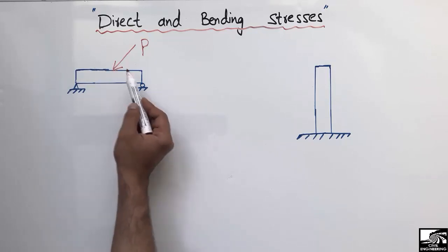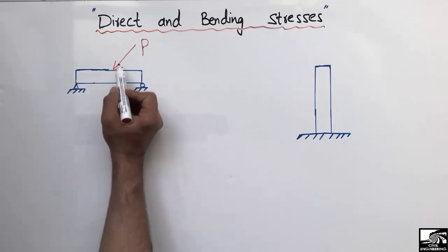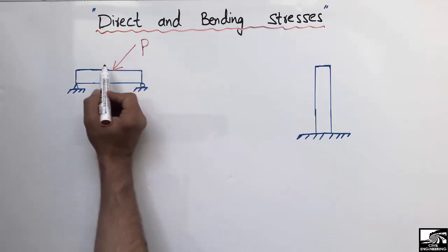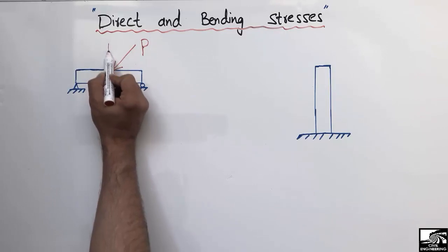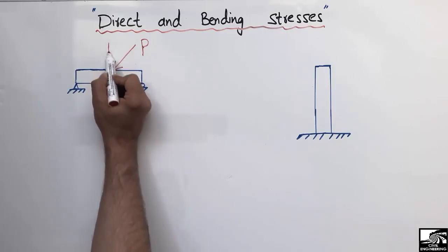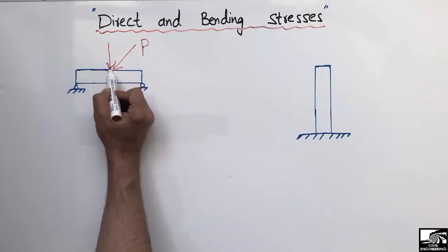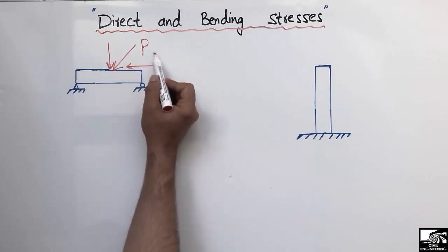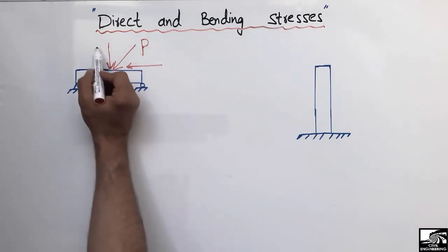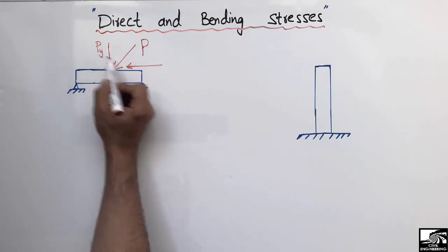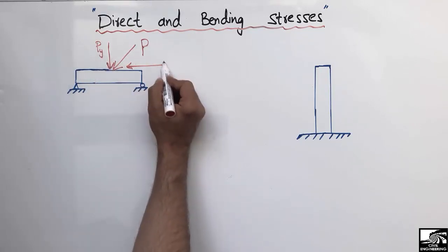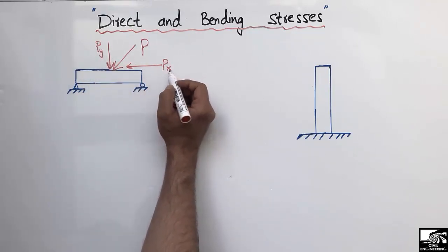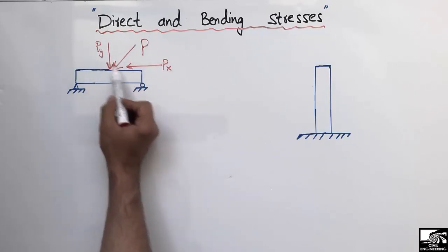Due to this inclined load, the beam will be subjected to two different types of stresses. This inclined load can be divided into two components: one will be the vertical component and the other will be the horizontal component of load P. The vertical component is called Py and the horizontal component is called Px.